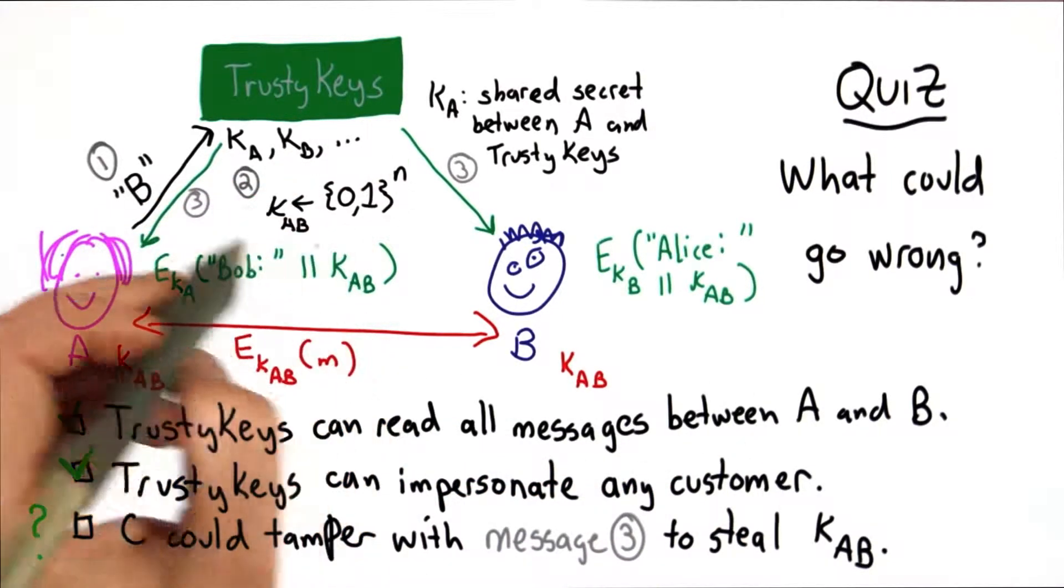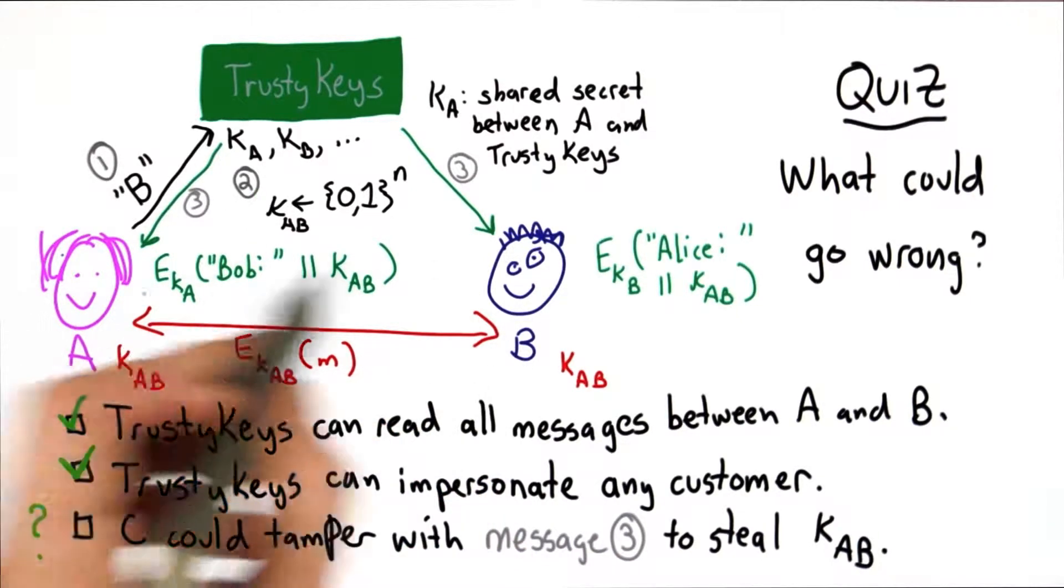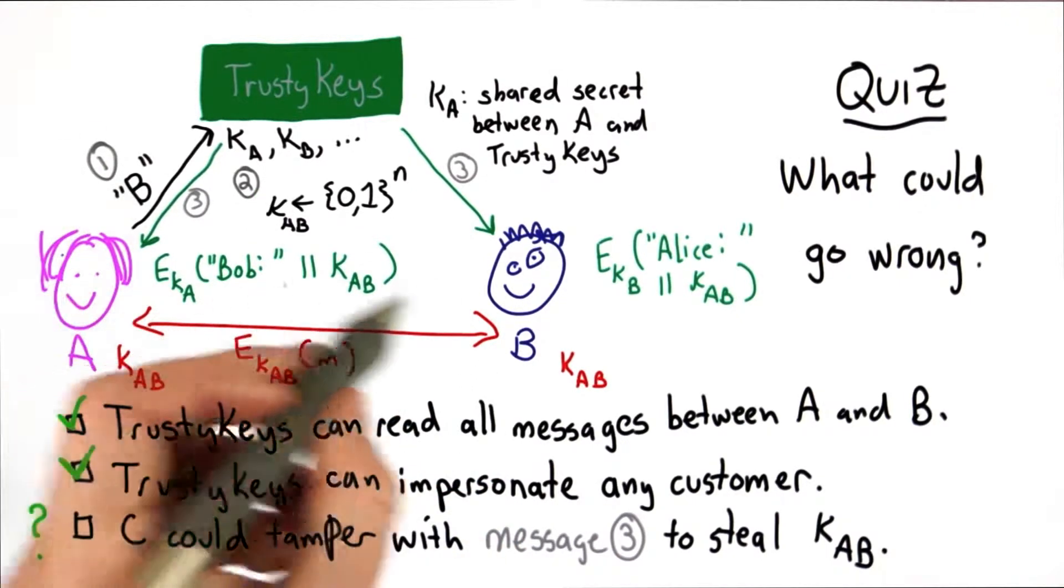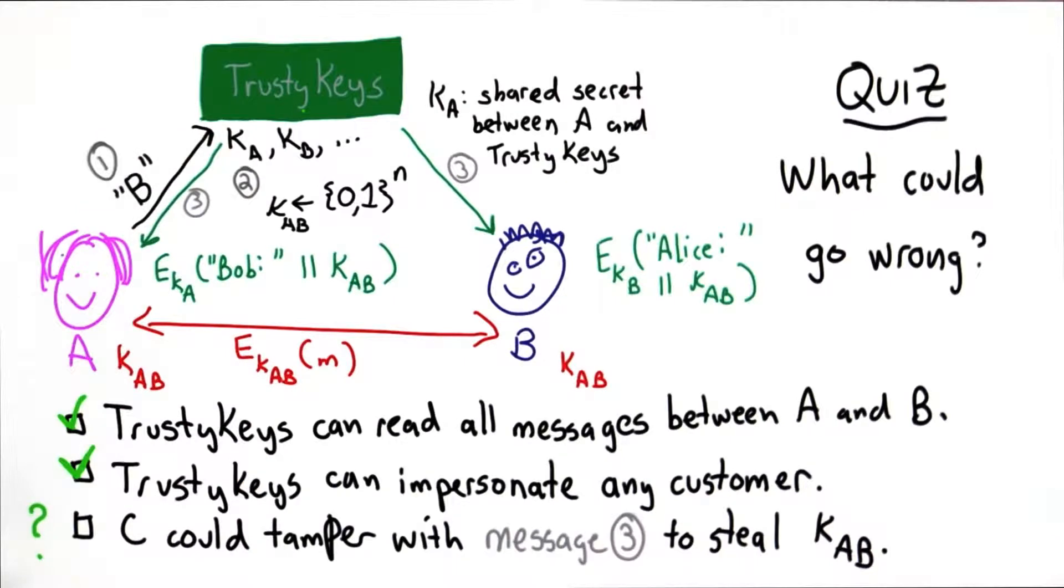In the first case, trusty keys generated key AB. That's the key used to protect these messages, so any message over this channel that trusty keys can intercept, it can read.